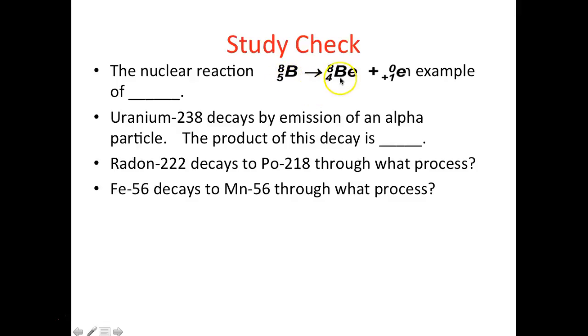The nuclear reaction of boron-85 gives you beryllium-84 plus positron - this is an example of positron emission. Uranium-238 decays by emission of an alpha particle. The product of this decay is thorium. Radon-222 decays to polonium-218.